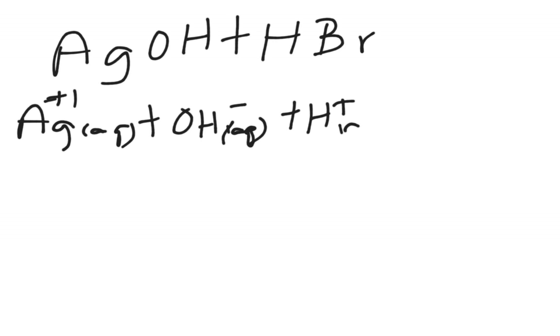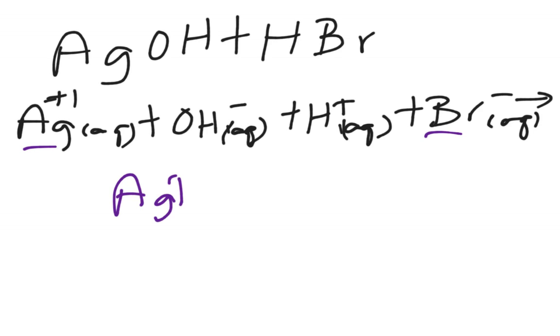So we have to break that down into its individual ions, so we're going to go Ag+ aqueous plus one, plus OH- aqueous, plus H+ aqueous, plus Br- aqueous, because they're all going to be in water, and then we're going to do our arrow. Well, from our rules of solubility, we look, we've got silver and we've got bromine. Those two are immediately going to precipitate out, so we're going to have AgBr and that's going to be a solid.